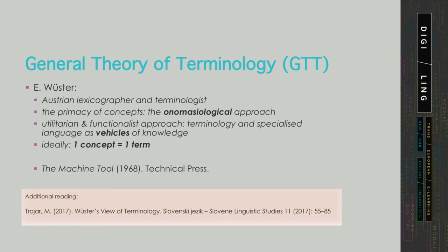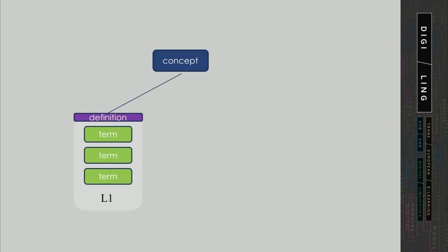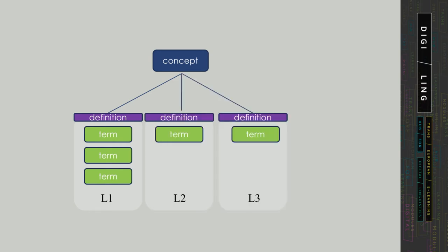Especially in a multilingual context, one should always start from the concept and its definition, and then examine the possible designations in a language. A multilingual terminological entry thus still describes a single concept, though it may list definitions in different languages and the respective terms.